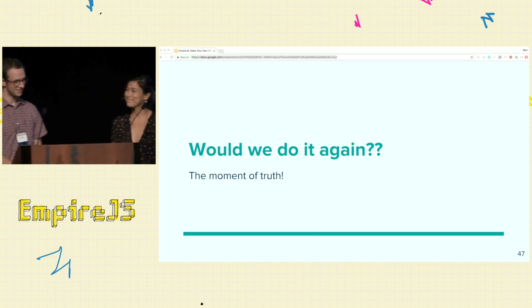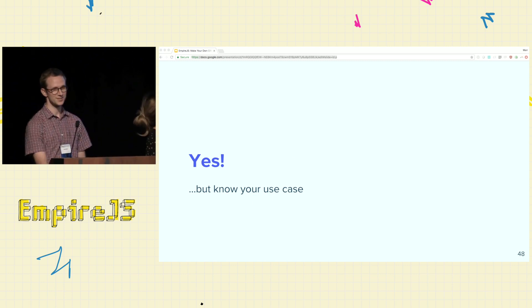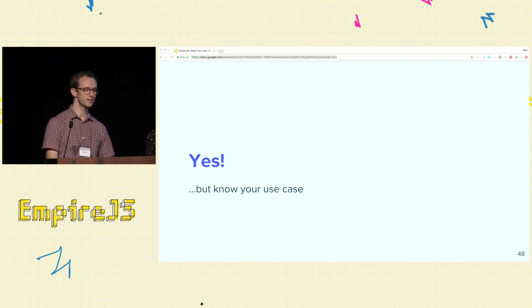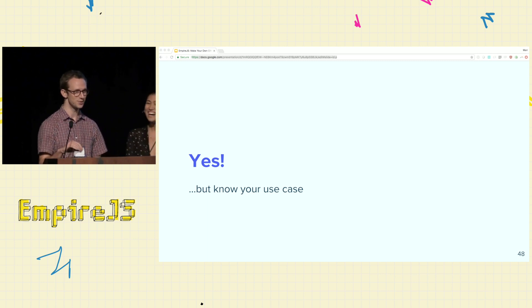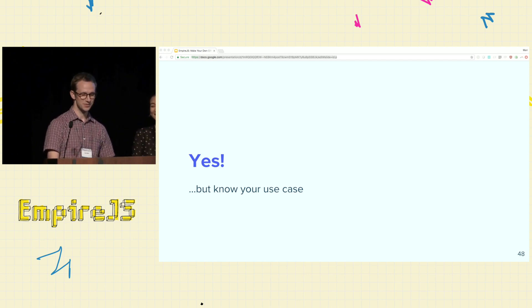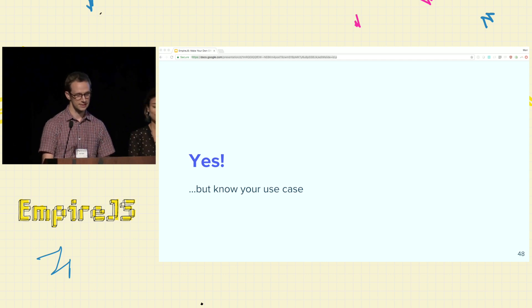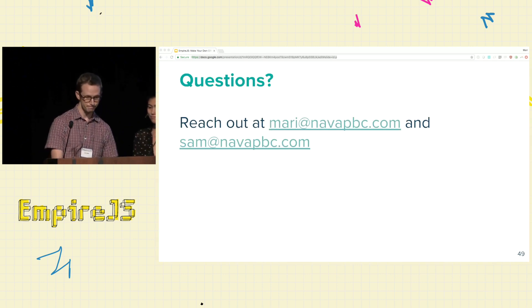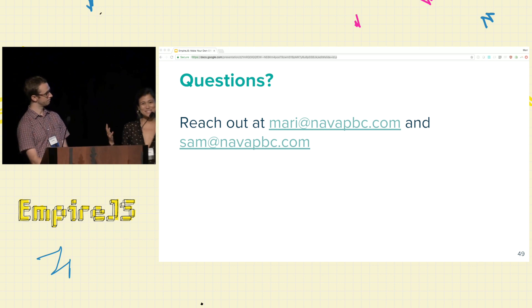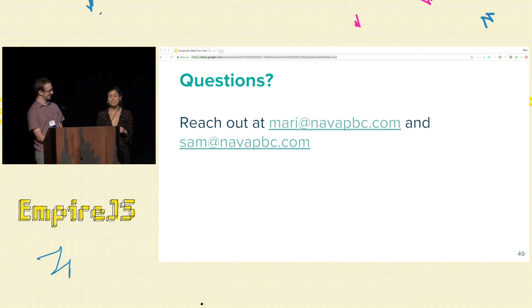So, the key question: would we do it again? Yes — or at least net neutral, maybe positive. The key is to know your use case: it really depends on what you're doing and what kinds of queries you're expecting to run. Because of the specific requirements on our system, it worked — but the requirements for your system might be different. In a lot of cases, off-the-shelf ORMs do work really well and solve common problems effectively. If you have questions, please email us or talk to us afterwards about ORMs and civic tech — we'd love to hear from you. Thank you.